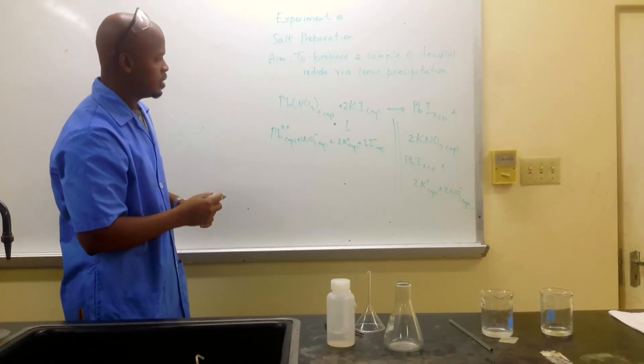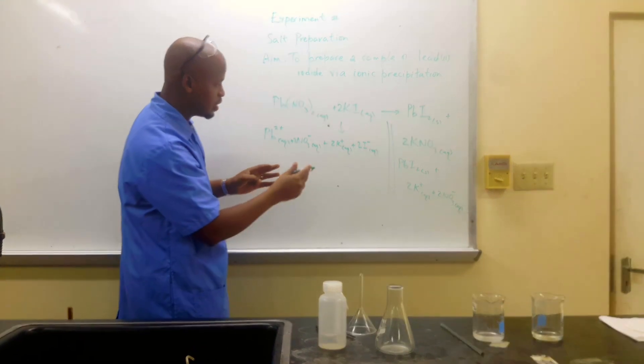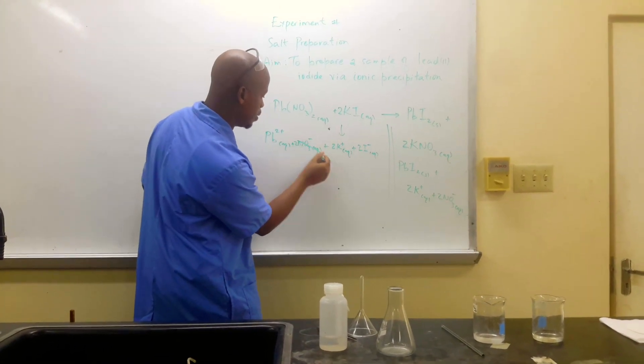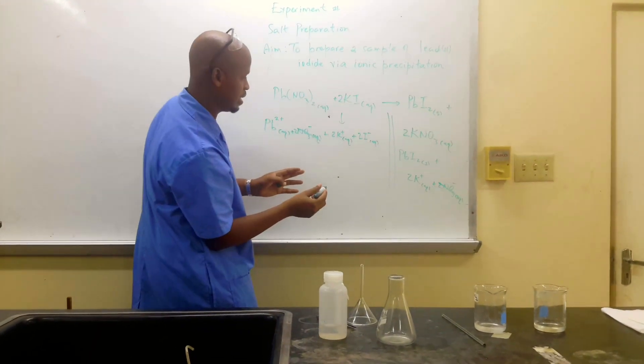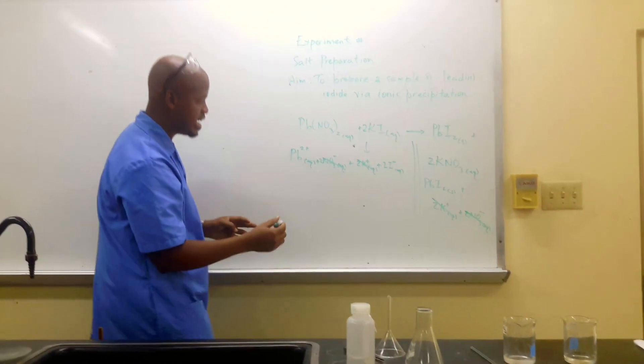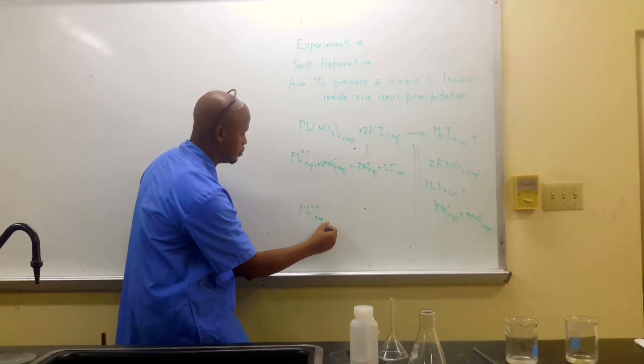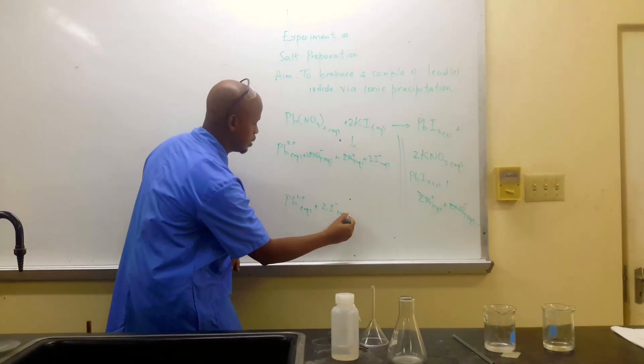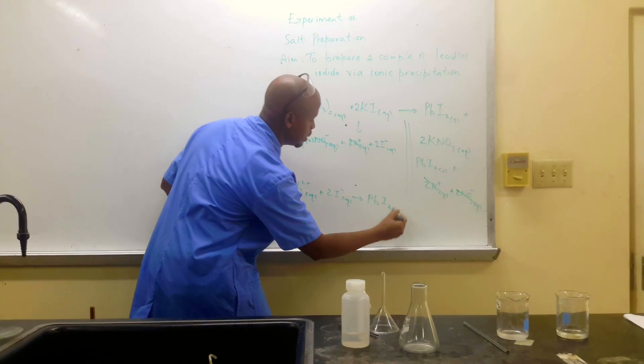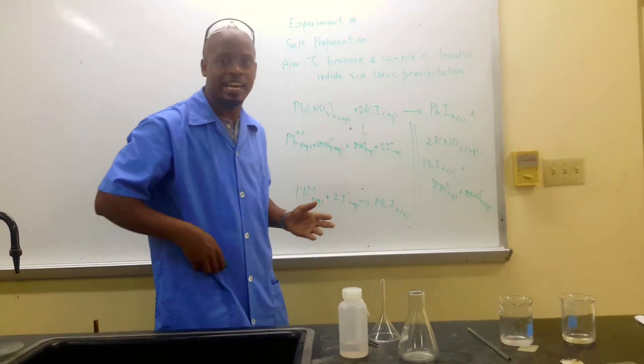So whenever we're in an ionic equation, we can cancel out or cut off anything that is common to both sides. So nitrates are the same on the left side and on the right. They're in the same state with the same charge. The potassium atoms have not changed. So it means they're spectator ions. So our net ionic equation will be Pb²⁺ plus two I⁻ will give us PbI₂ solid. So this is theory. This is what is supposed to be happening on the microscopic level. Let us see what this looks like in real life.